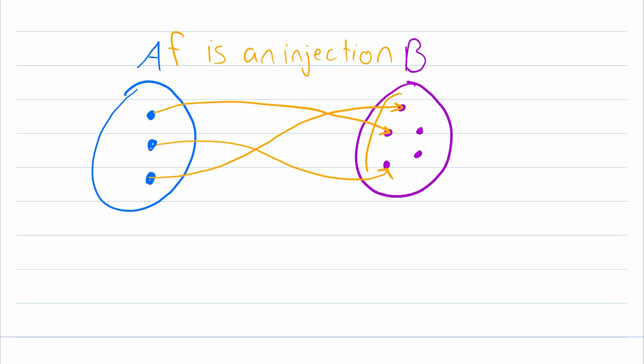Notice in this case that the range is this set of elements here. So not every element in the codomain is getting mapped to, and that's totally fine for an injective function. But it's not fine for another type of function called a surjection, and we'll talk more about those in another lesson.